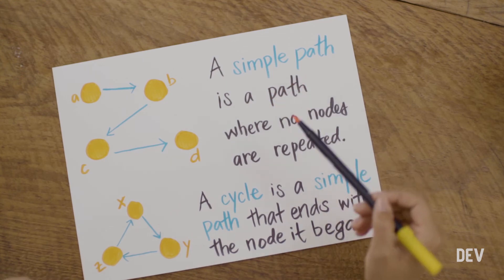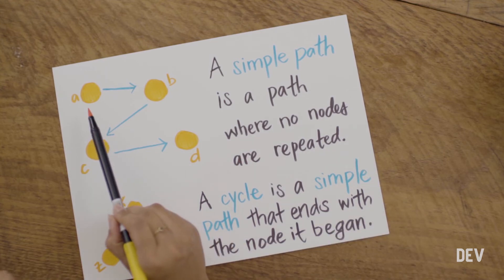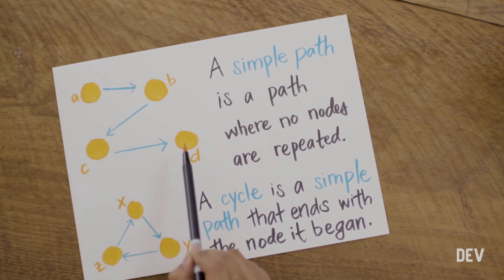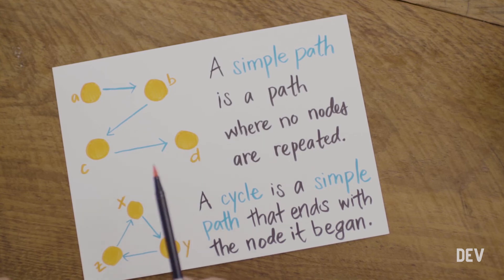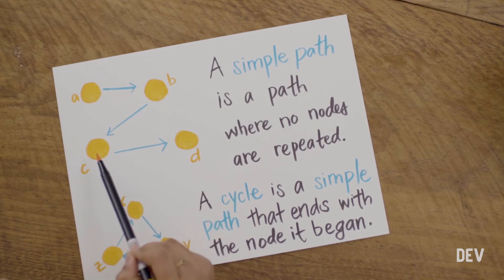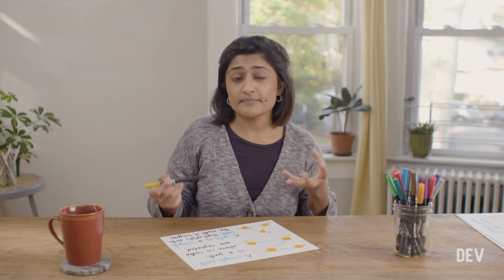But when Euler was trying to find a way to walk through every bridge in Konigsberg, he was trying to find a special kind of path — a simple path through these bridges. A simple path is a path where no nodes, no vertices, are repeated. So, for example, in this graph, if we were trying to find a path from node A, the origin, to node D, the destination, without repeating ourselves, we could start at node A, move to node B, traverse to node C, and end up at node D. This is a simple path because we're finding a path through the graph but not repeating ourselves by revisiting any vertices.